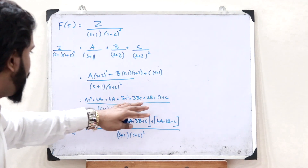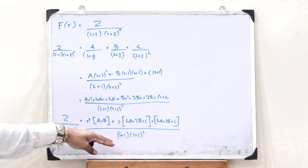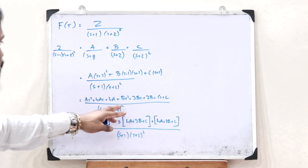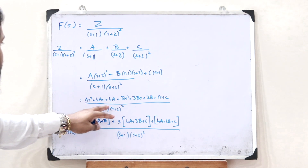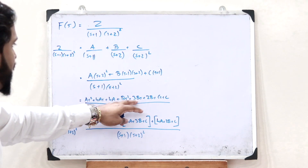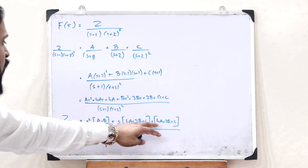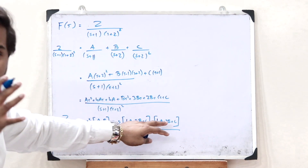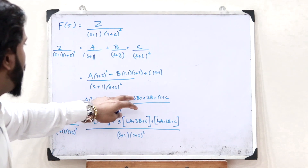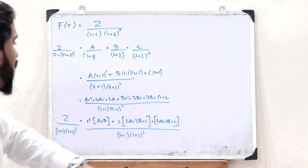Upon grouping: the s² components give s²(A + B); the s components give s(4A + 3B + C); and the constants give 4A + 2B + C.